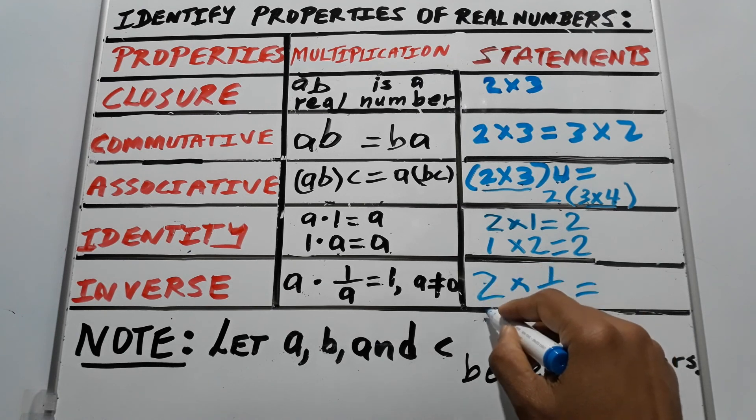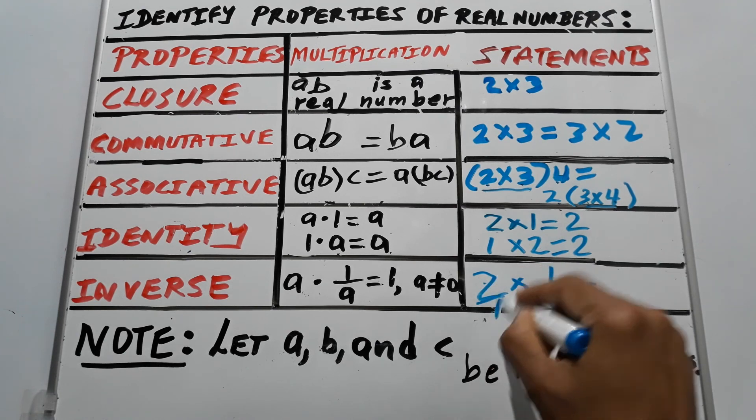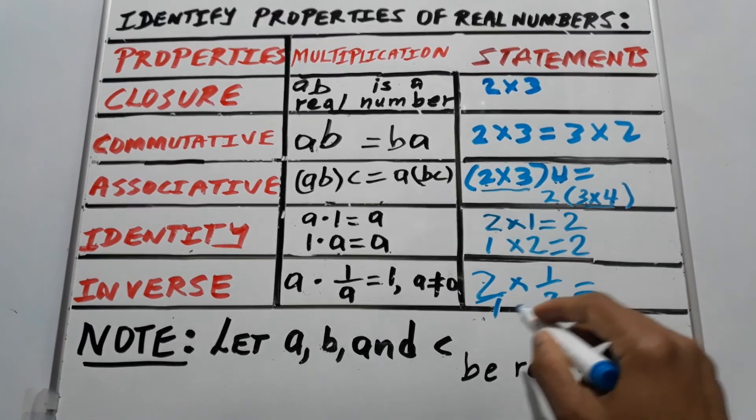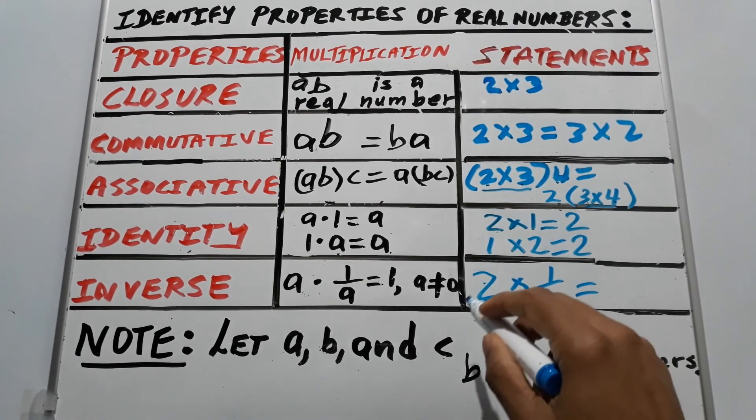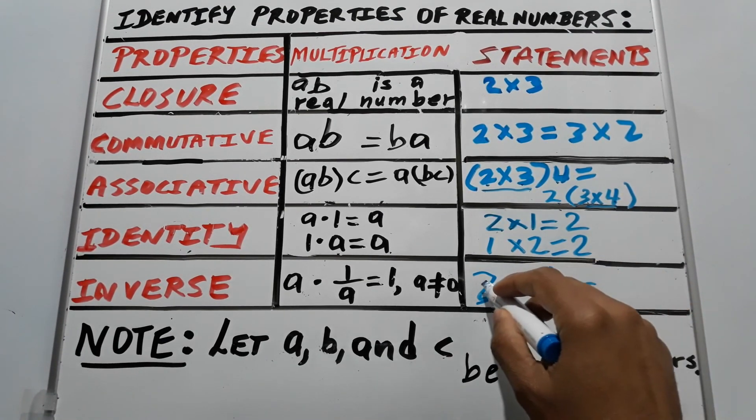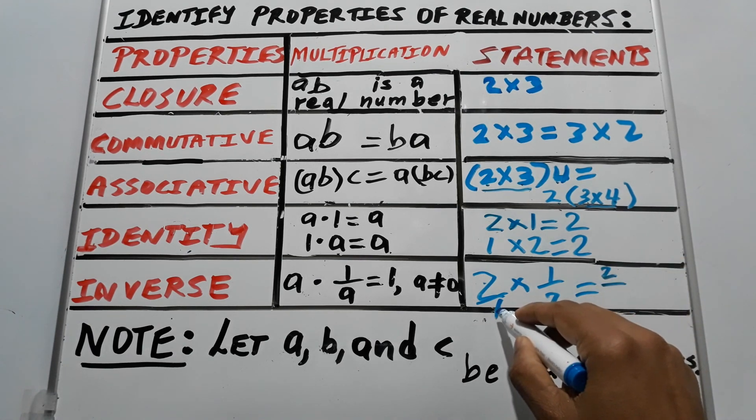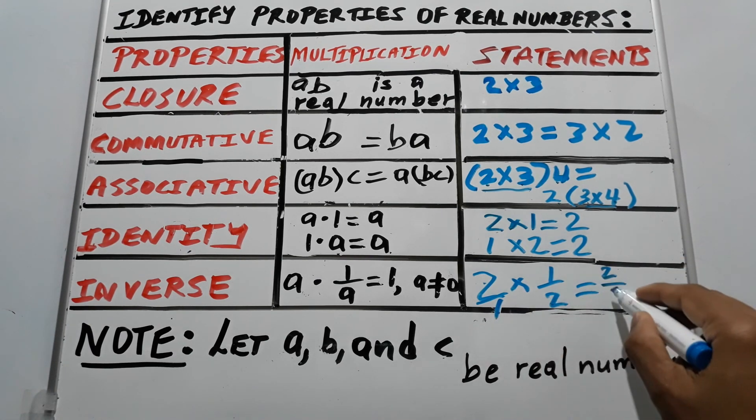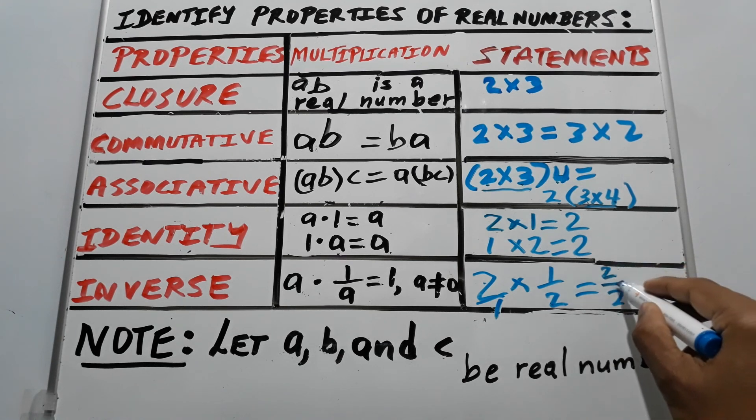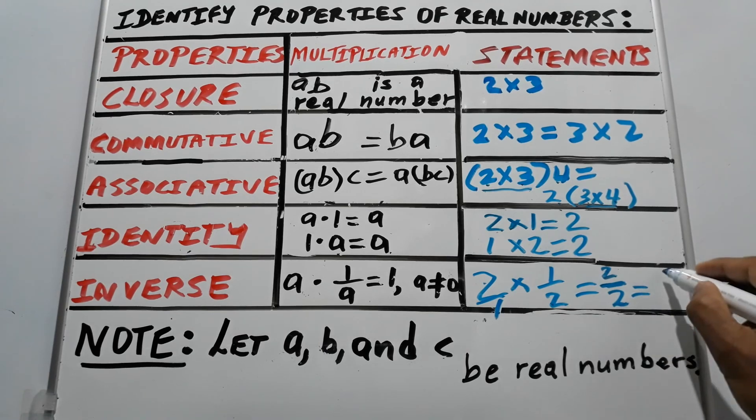You multiply the numerators across: two times one is two. Multiply the denominators across: one times two is two. Two divided by two equals one.